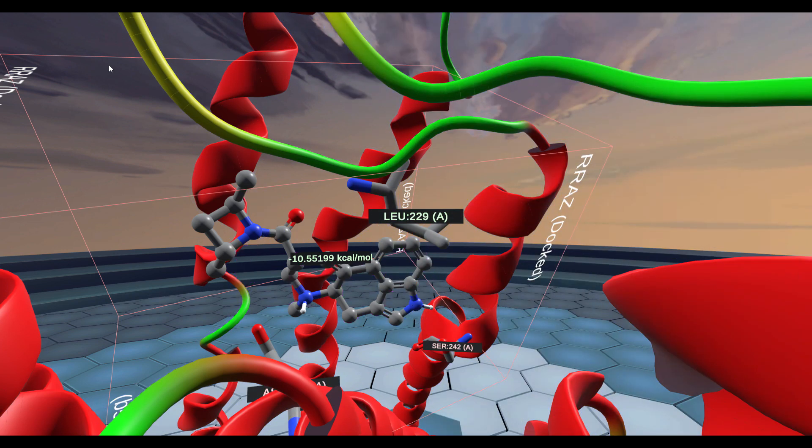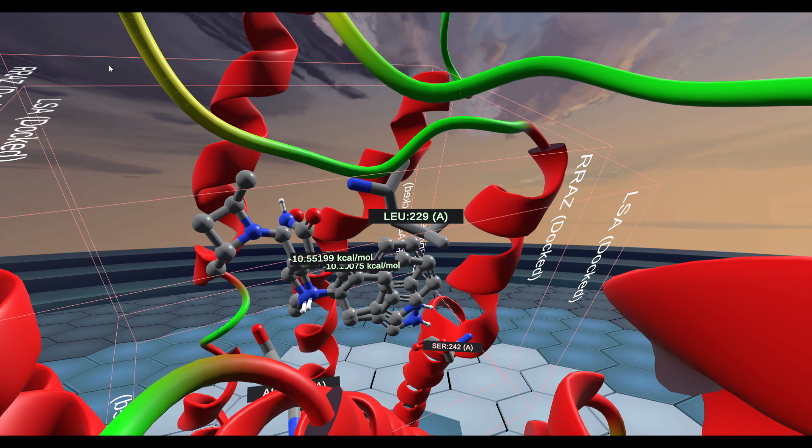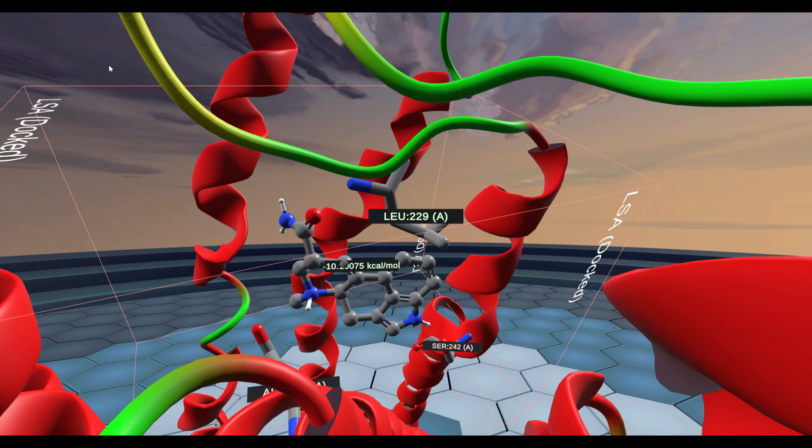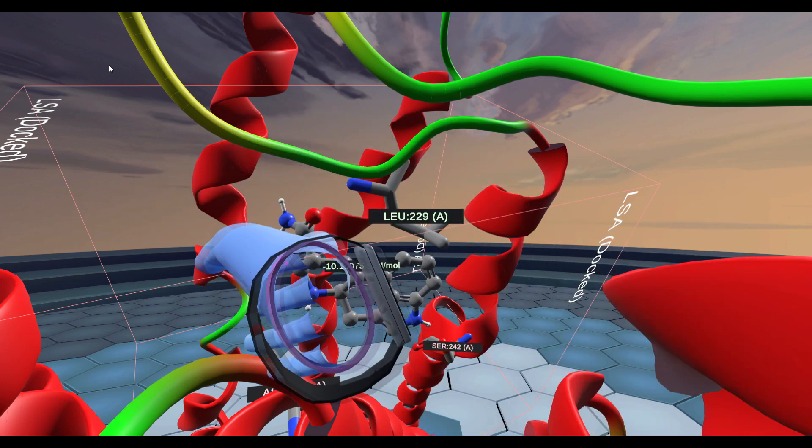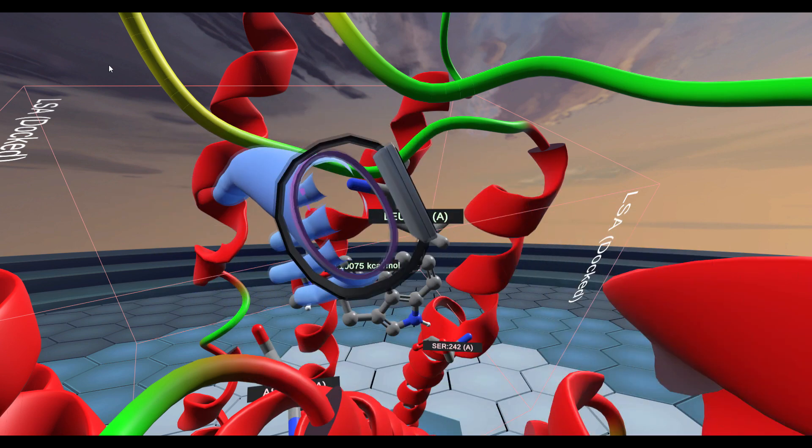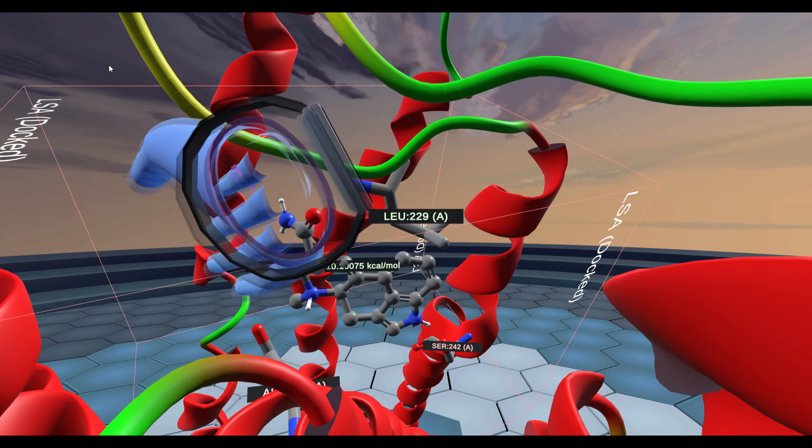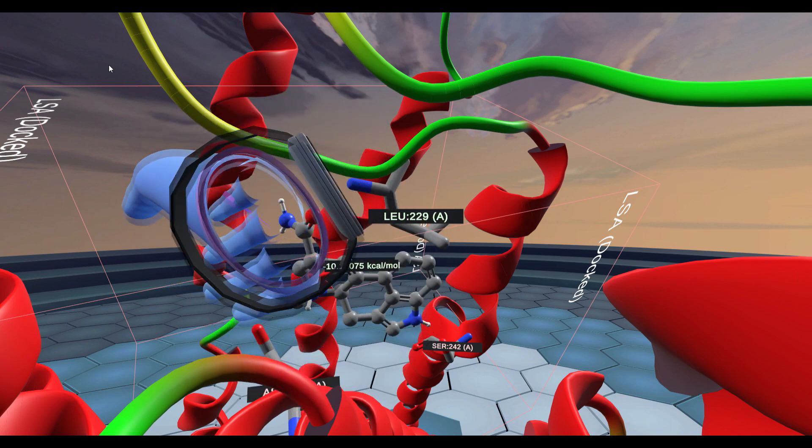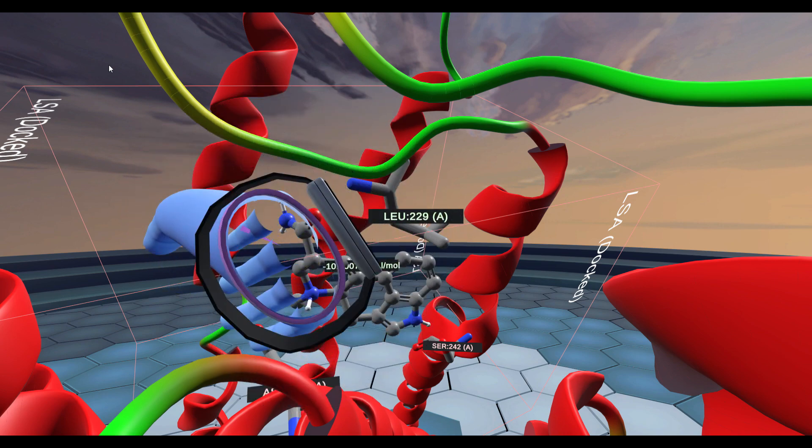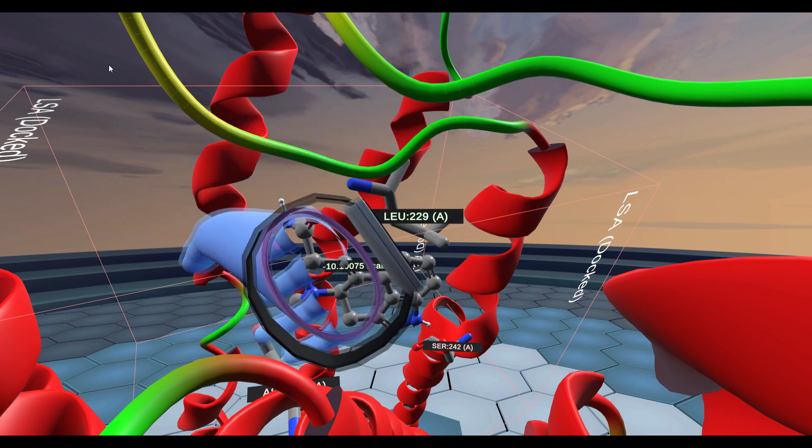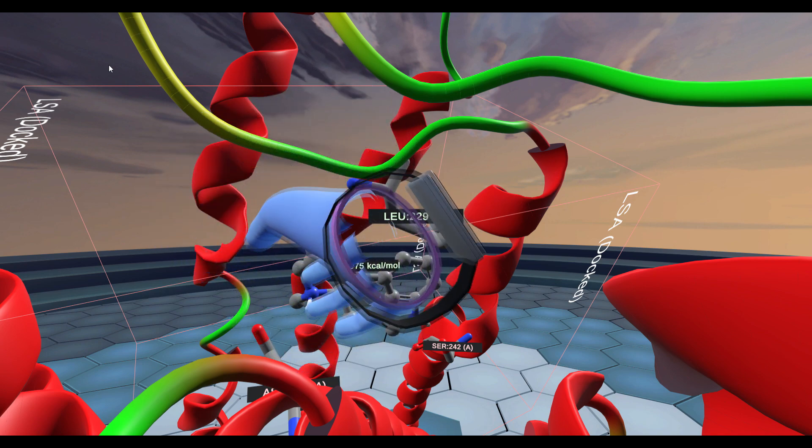He also builds—you guys may have heard of this other compound, LSA—this is from Hawaiian baby woodrose seeds. I know this compound has been used recreationally, but it does not produce a similar trip to LSD. Notice how it lacks the diethylamide group right here. Because it lacks that group, it does not produce the potency and efficacy of LSD and it's actually much weaker than the RRAZ derivative.